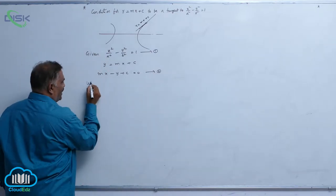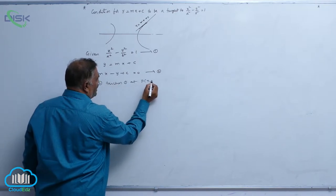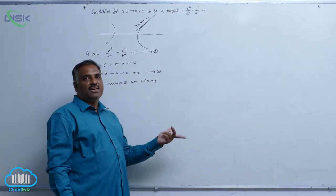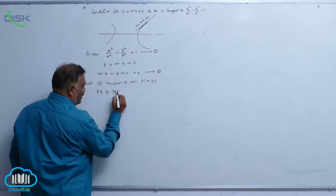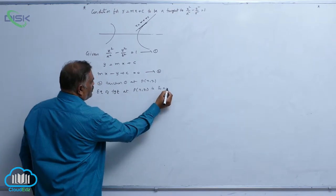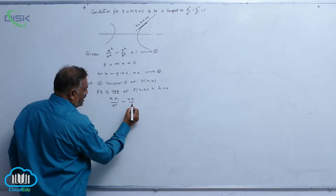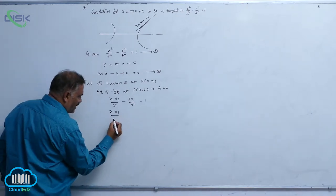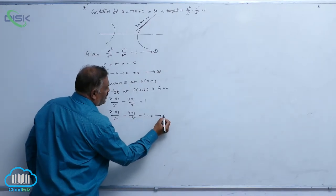Let equation 2 touch equation 1 at point P(x₁, y₁). Since the point lies on the curve, the equation of tangent is S₁ = 0. So the equation of tangent at P(x₁, y₁) is: xx₁/a² - yy₁/b² = 1, or xx₁/a² - yy₁/b² - 1 = 0. Call this equation 3.